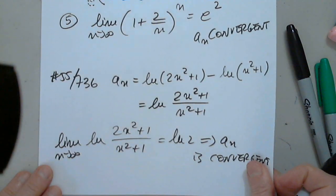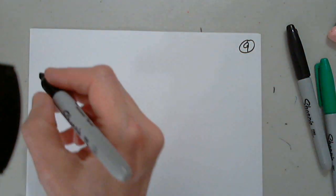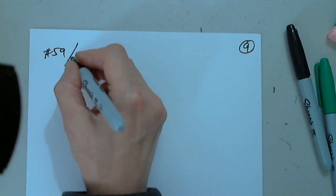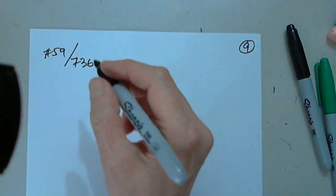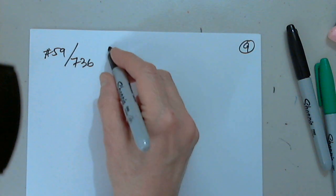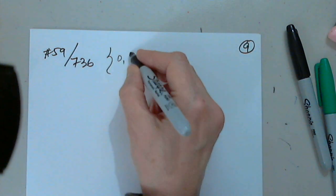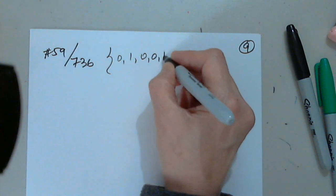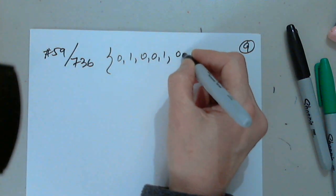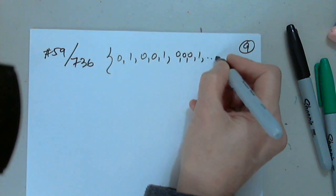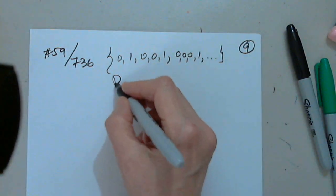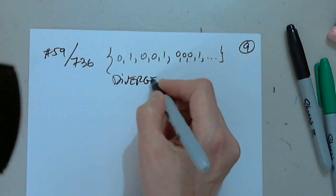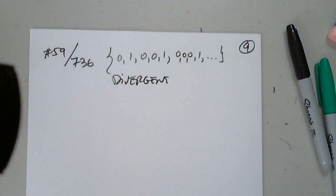Let's look at 59 on the same page 736. We have a sequence given as 0, 1, 0, 0, 1, 0, 0, 0, 1, 0, 0, 0, 0, 1, and so on. This is obviously divergent — a sub n does not approach a number.